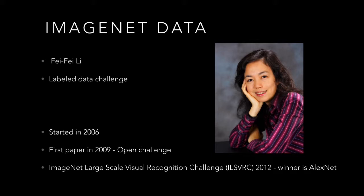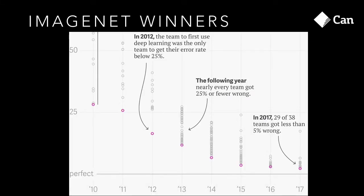The big ImageNet challenge was in 2012, and that's when they became well known. She was an associate professor at an unknown university before — now she's working at Stanford, very respected, and speaks at every conference. What's interesting are the outcomes of the challenge. In 2015 the first several teams reached human-level accuracy for image recognition tasks. This year, 29 out of 38 teams performed better than human level. Machines can now do better image recognition and classification than humans.